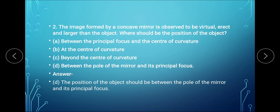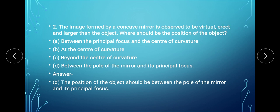In question number 2, the image formed by a concave mirror is observed to be virtual, erect, and larger than the object. What should be the position of the object? Option A: between the principal focus and center of curvature. Option B: at the center of curvature. Option C: beyond the center of curvature. Option D: between the pole of the mirror and its principal focus. Since the image is virtual, erect, and larger than the object, this is only formed when the object is between P and F of the concave mirror. Therefore, option D is correct.